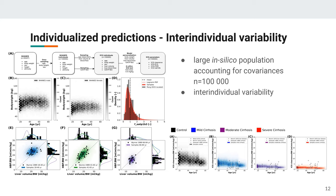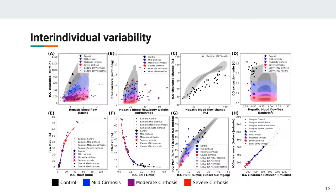Interestingly, instead of a single simulation we now have 10,000 simulations, giving us clouds of model predictions to compare against data — finding discrepancies or agreements. Some parameter combinations show essentially no variability: 10,000 simulations all lying on a line because some parameters compensate each other in the model. Whereas if we plot ICG clearance against hepatic blood flow there is much larger variability. These patterns are very informative about the model's structure.